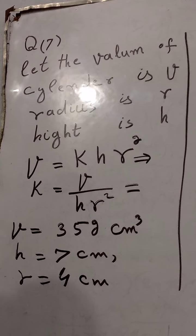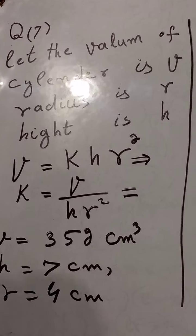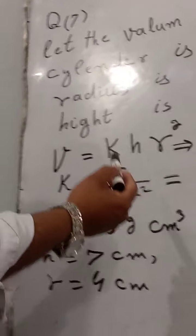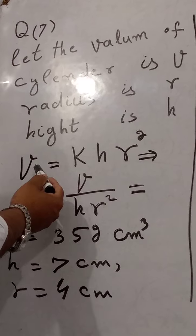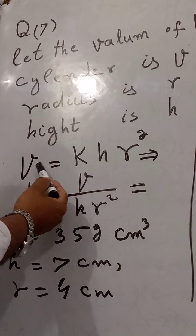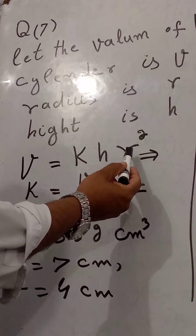The volume of the cylinder is directly proportional to the height and the square of the radius. From this, we first find K. V is equal to K H R square.